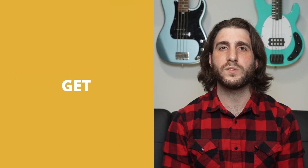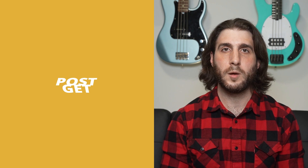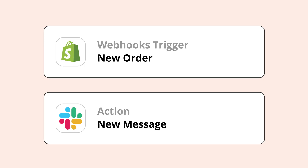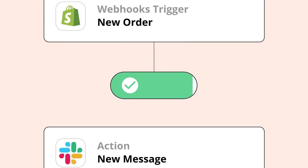The most common request methods are GET, POST, PUT, and DELETE. Once an app receives the HTTP request from a webhook, it'll send a response, letting your trigger app know if the request was completed successfully.